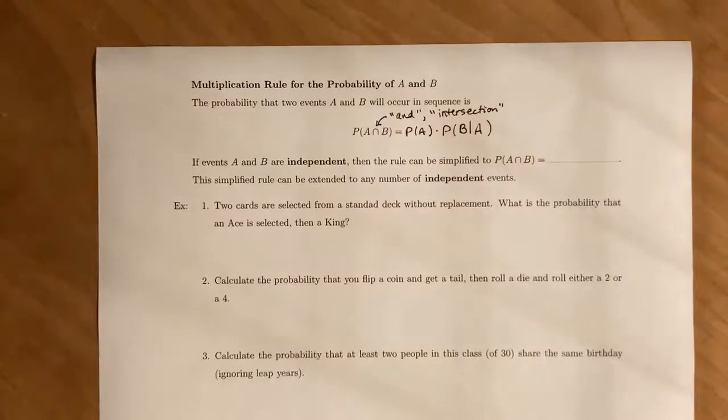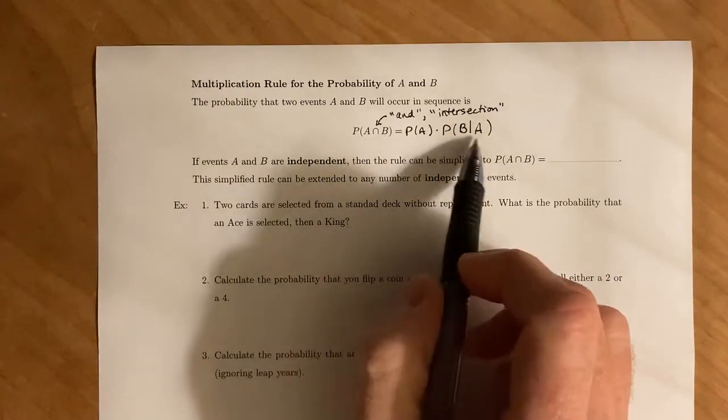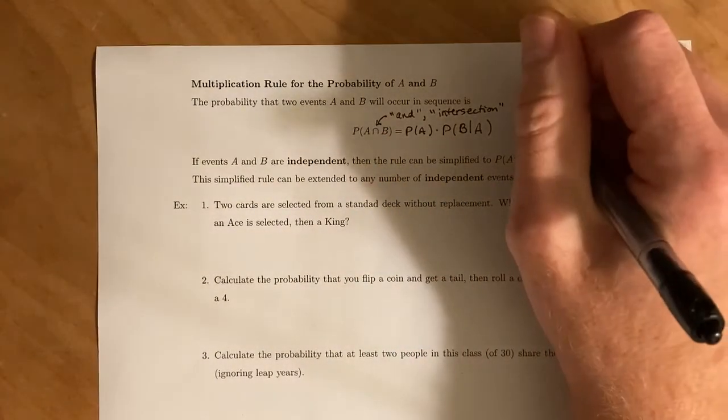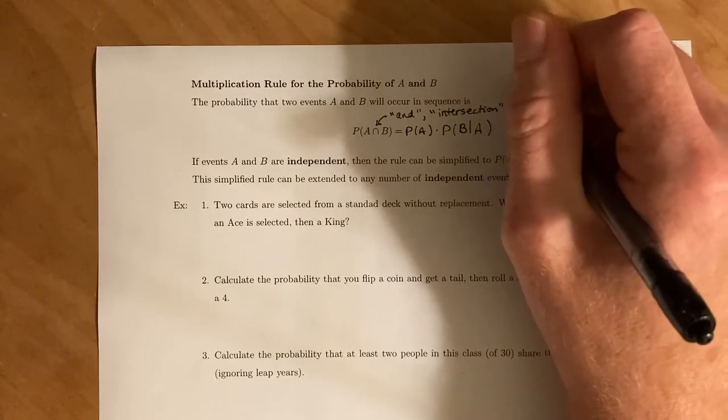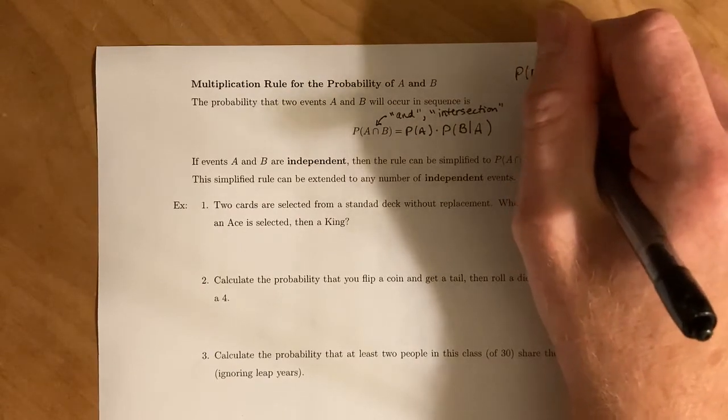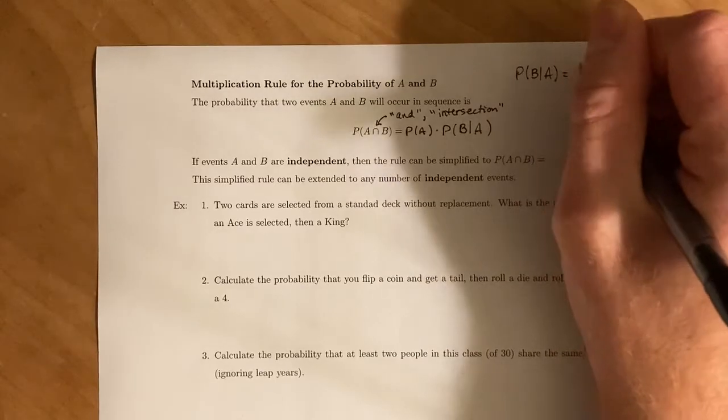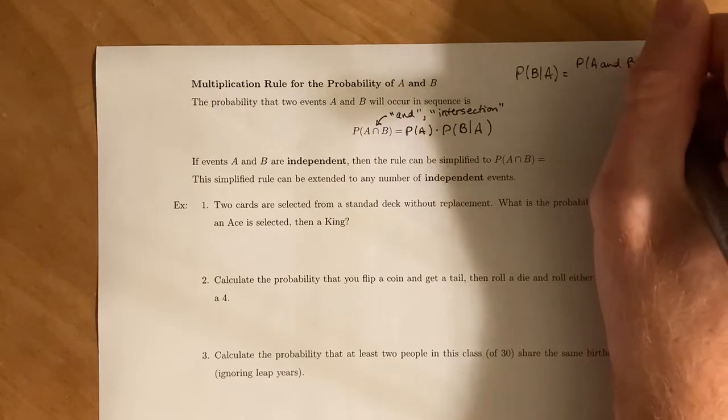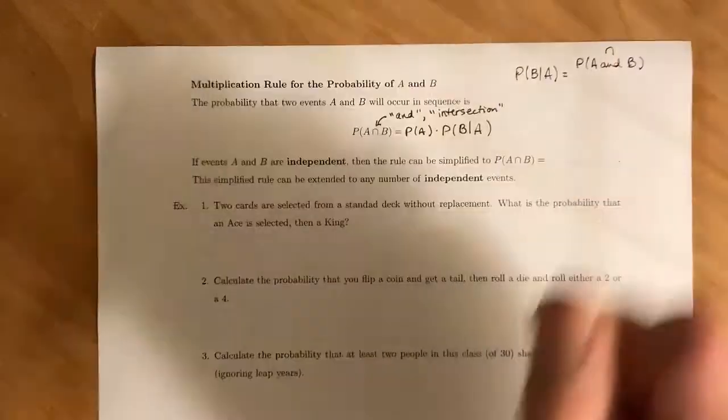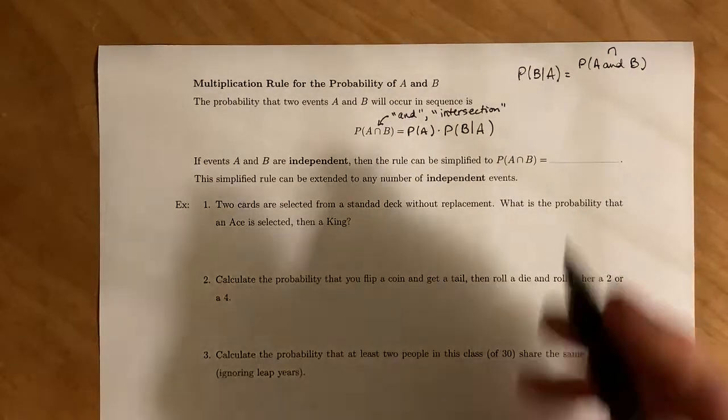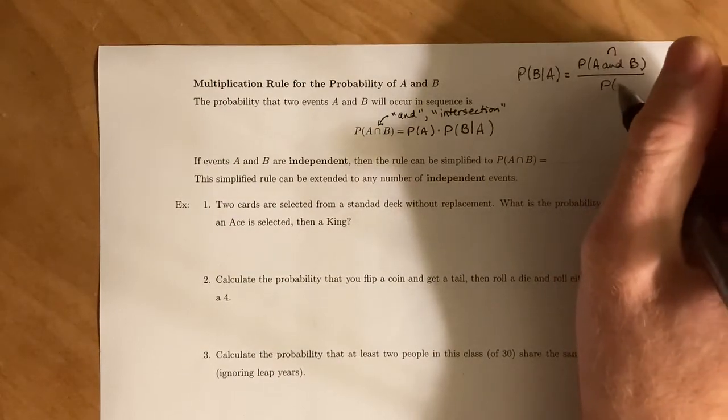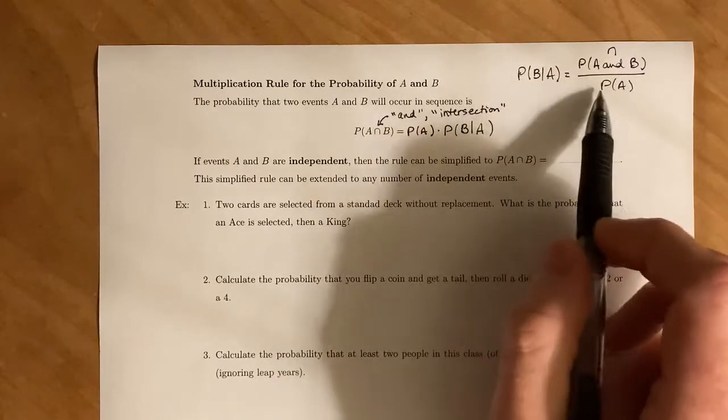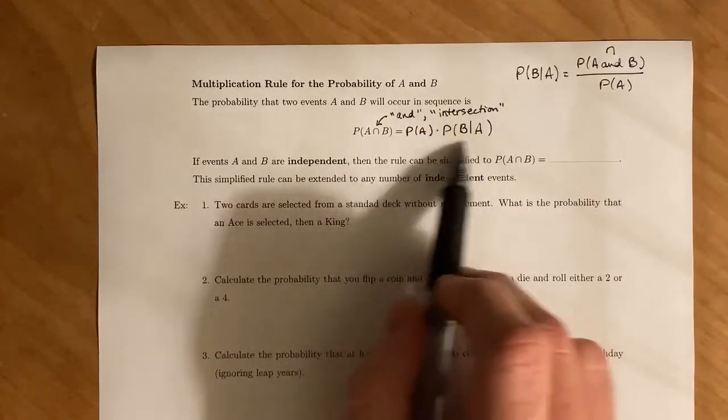And the way to remember that is to either memorize this or memorize the definition of conditional probability. Just to recall, for conditional probability, the probability of B given A is equal to the probability of A and B, so that's the upside down U symbol, divided by the probability of A. And all we did was multiply both sides by the probability of A to give us this formula here.